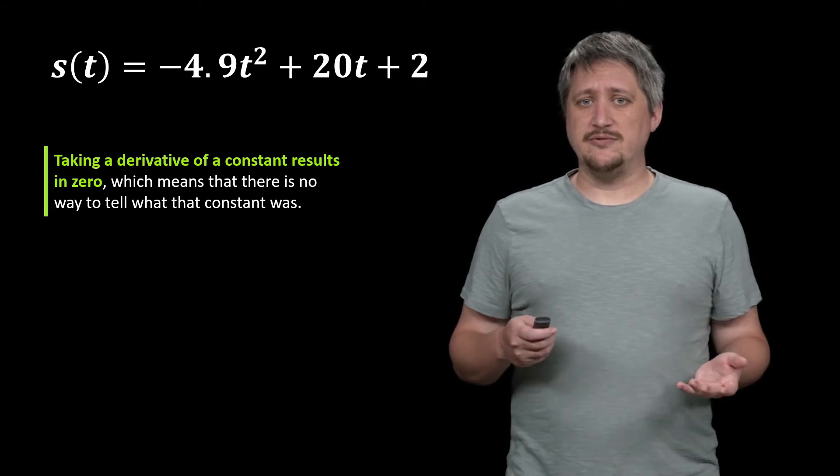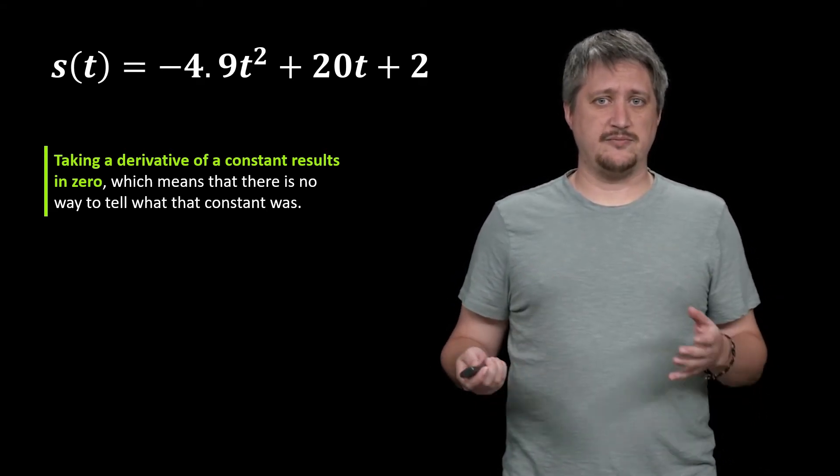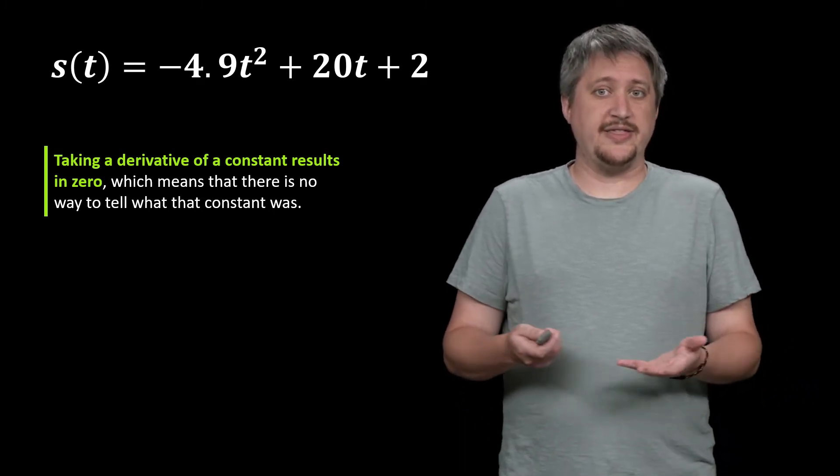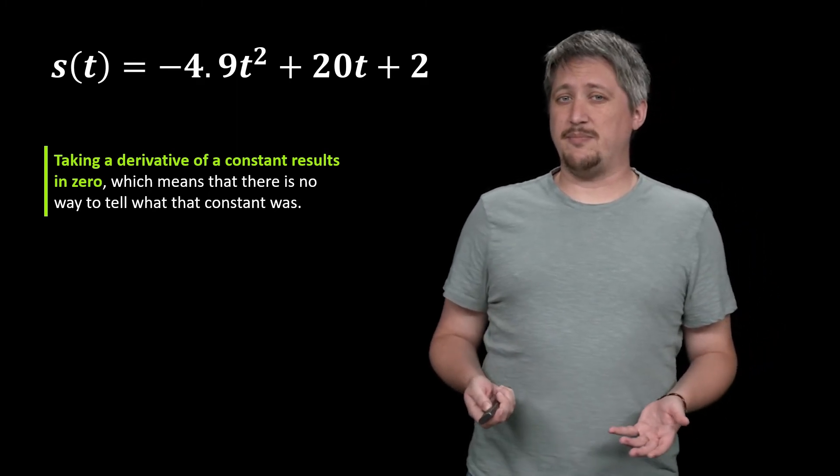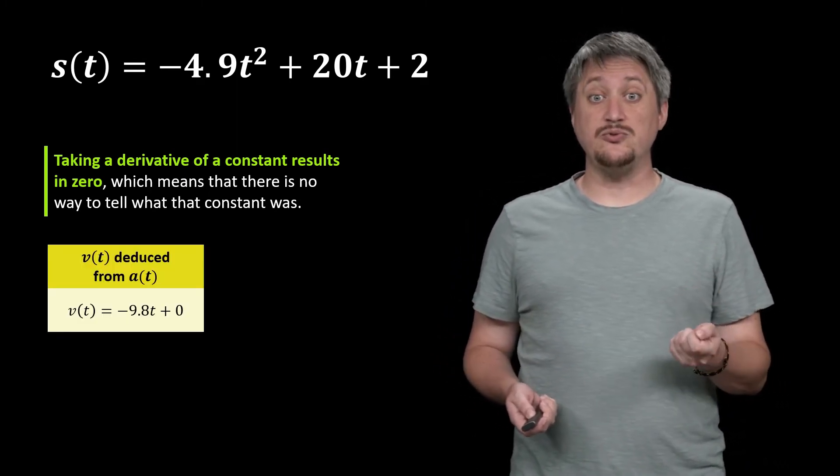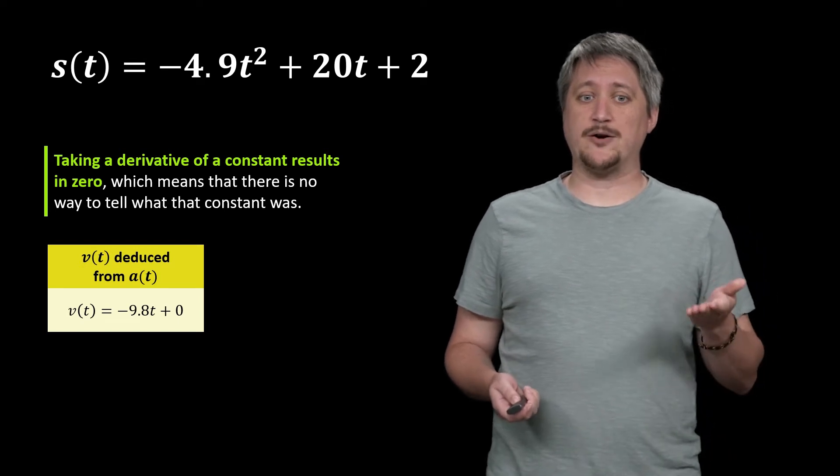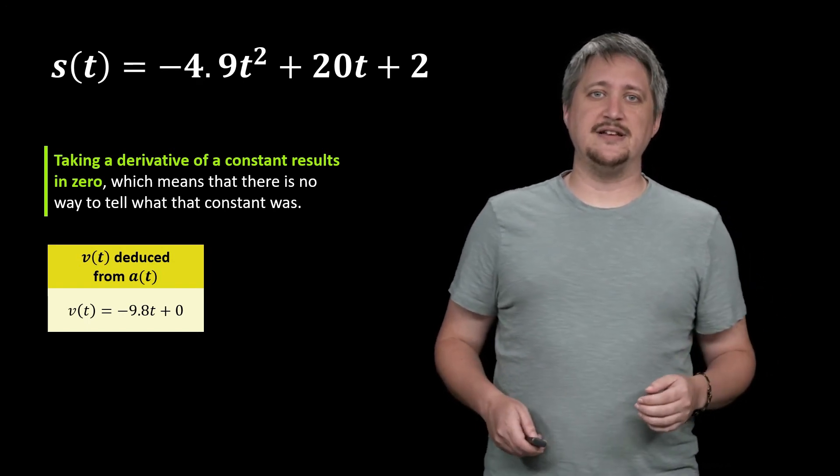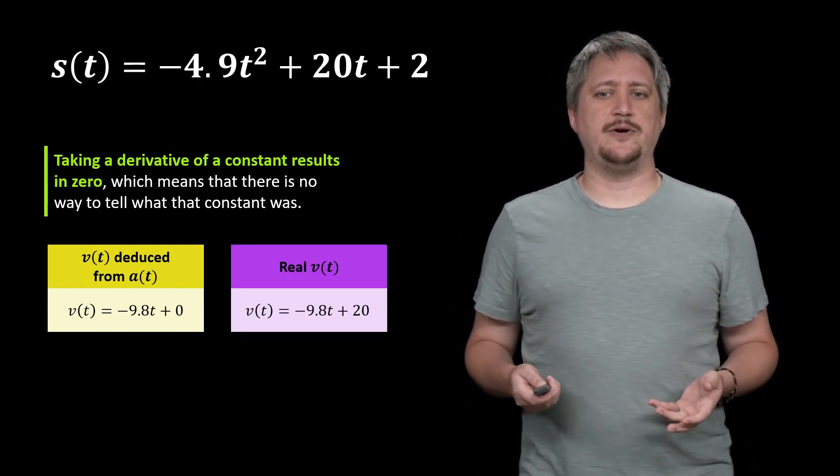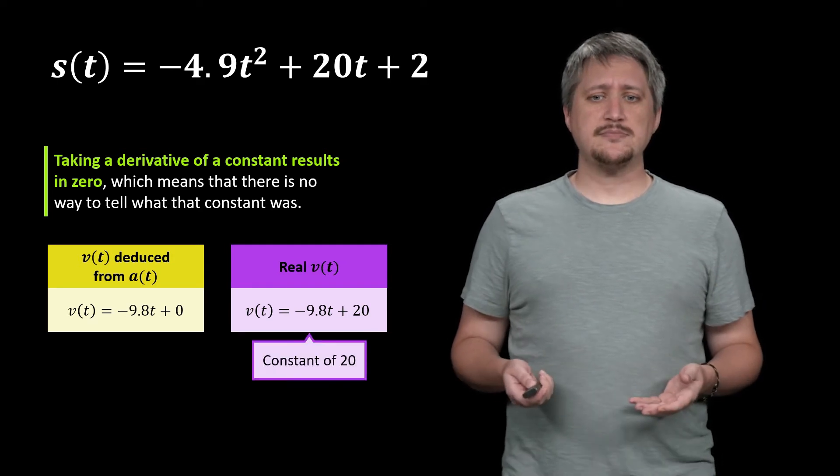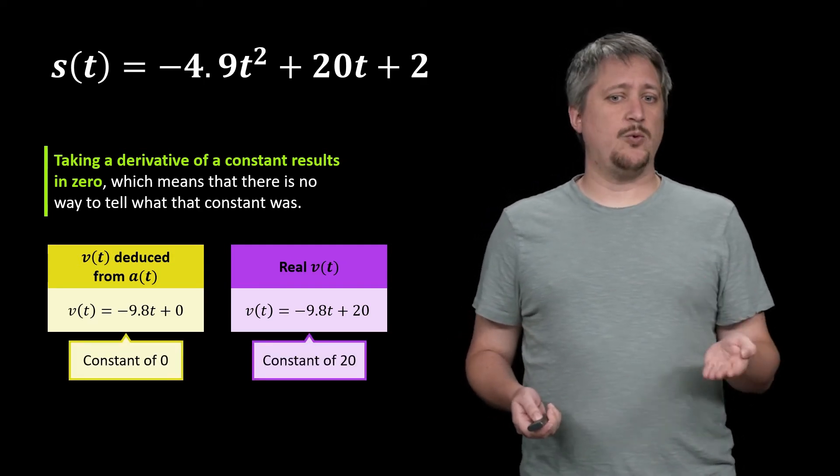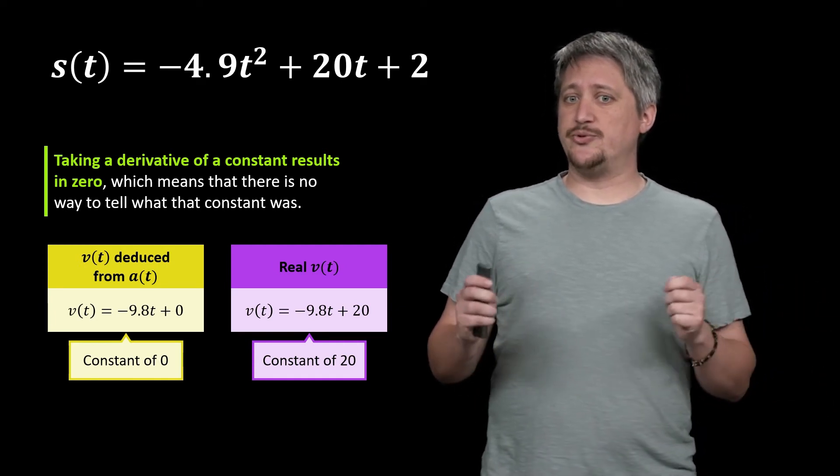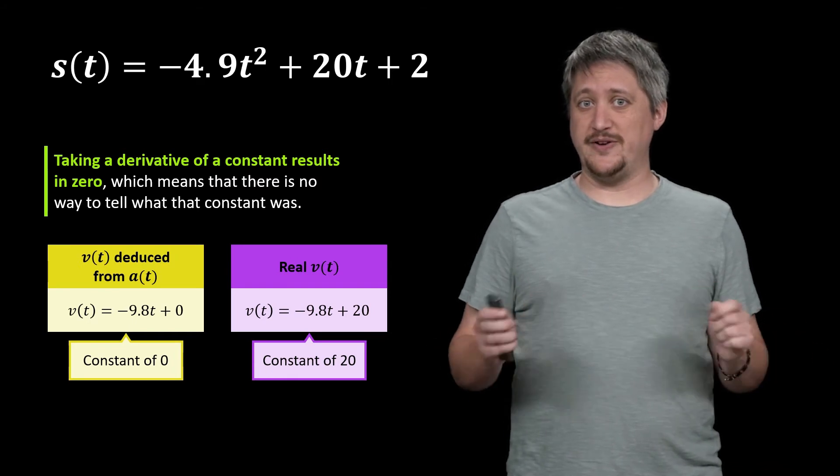Well remember when you take a derivative of a constant, that result is zero. The constant goes to zero which means there's no way to tell what that constant was. And this is essentially what's happening in our example. So the v of t we deduced from trying to work backwards was this negative 9.8t plus zero. But the real v of t was this negative 9.8t plus 20. One of them had a constant of 20, one had a constant of zero. That was the difference between the two. But taking a derivative would kill both of those values equally.